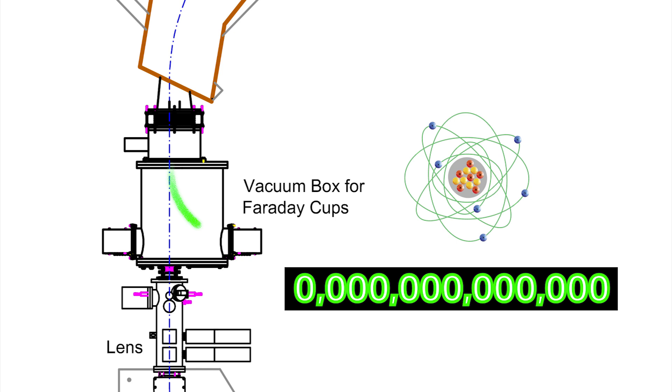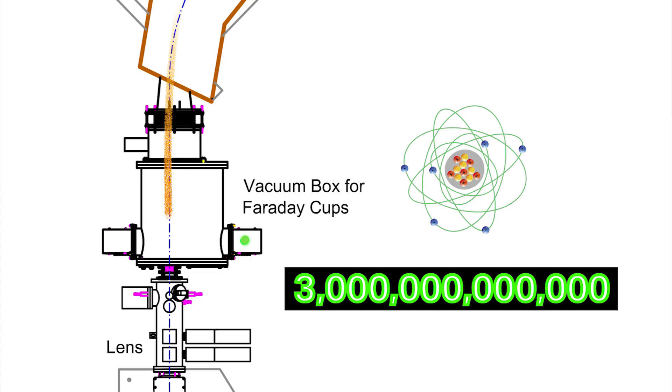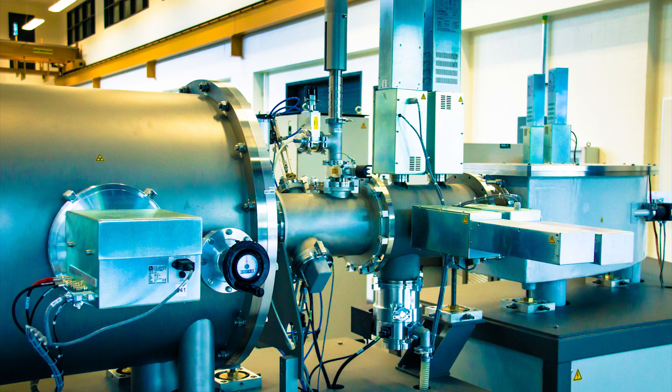So we're going to now count. We're going to measure the strength of the carbon 12 and the carbon 13 beams. But carbon 14 is a very weak beam, and we can't measure its strength with current. We have to actually count the atoms of carbon in that beam.